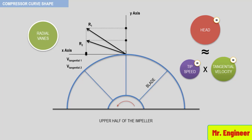Therefore, the curve shape will be flatter and will possess much less of a head rise than that of a non-radial vane. In reality, the effects of friction will produce a curve shape that increases from high flows to low flows, but with much less of a head increase — typically around 3% head rise or less. This is an important fact, since the operating point of any centrifugal compressor is the intersection of the head required by the process and the head produced by the compressor. A compressor with a low head rise curve will be extremely sensitive to process changes compared to one with a higher head rise.